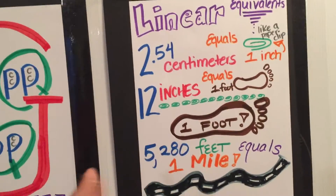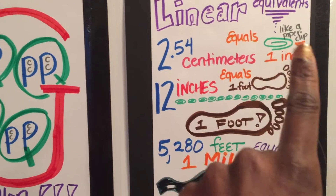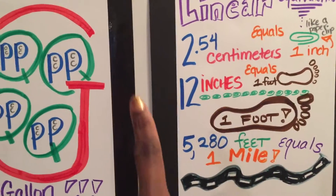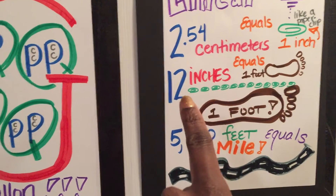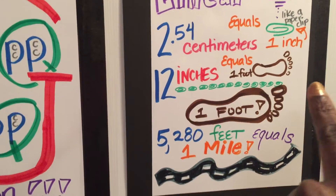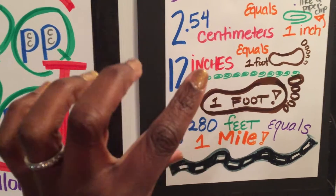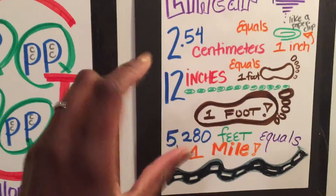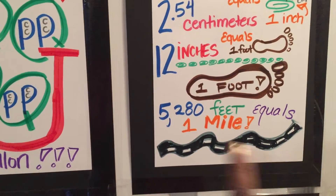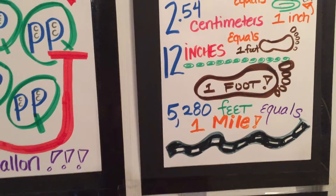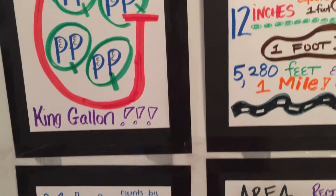Linear equivalents: 2.4 centimeters equals one inch, and I did like a paper clip — so cute. 12 inches equals one foot, and then I put 12 paper clips and the foot underneath it so they can see the equivalent. And then 5,280 feet equals one mile. Just get out some markers and go for it — you never know what you're going to come up with.